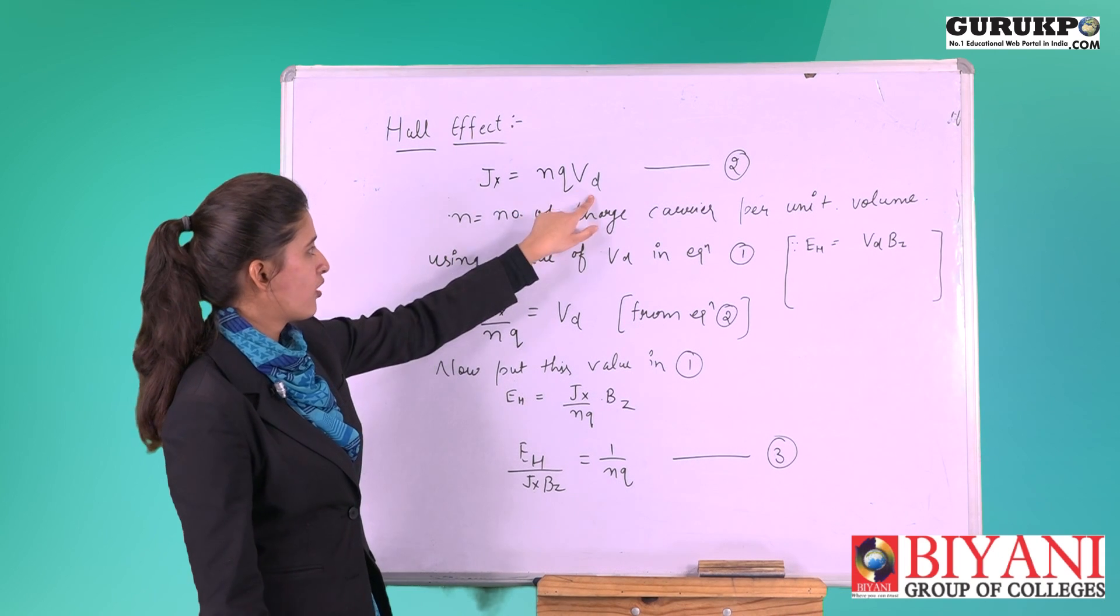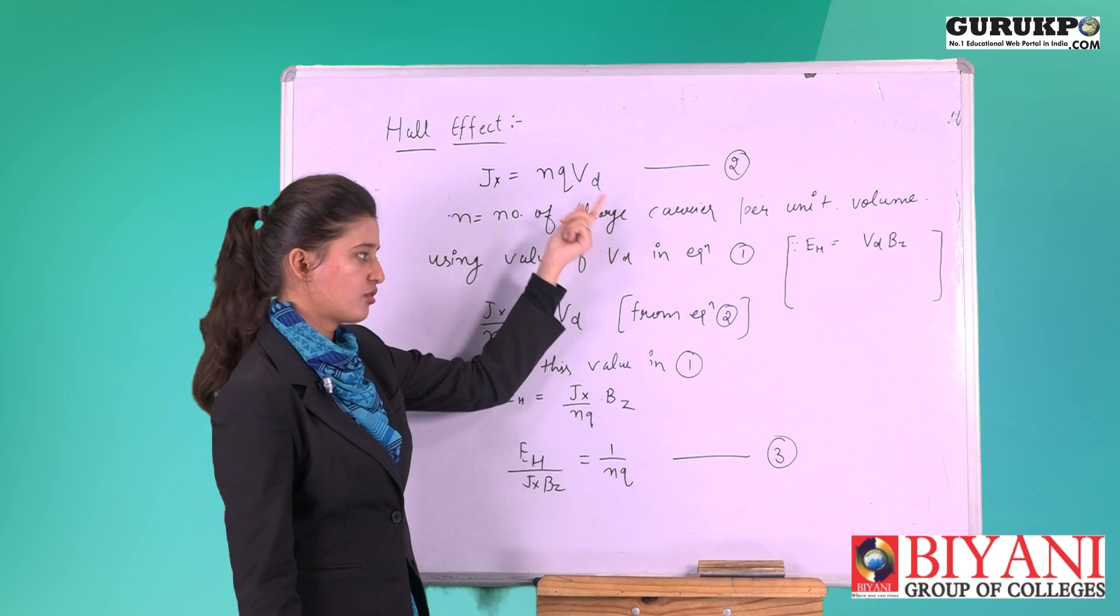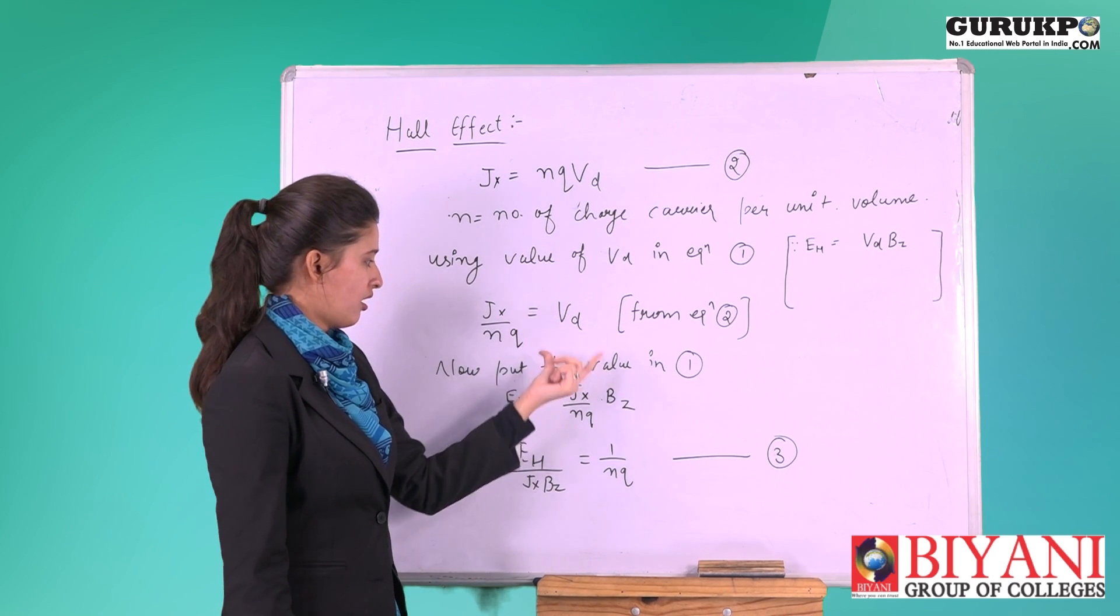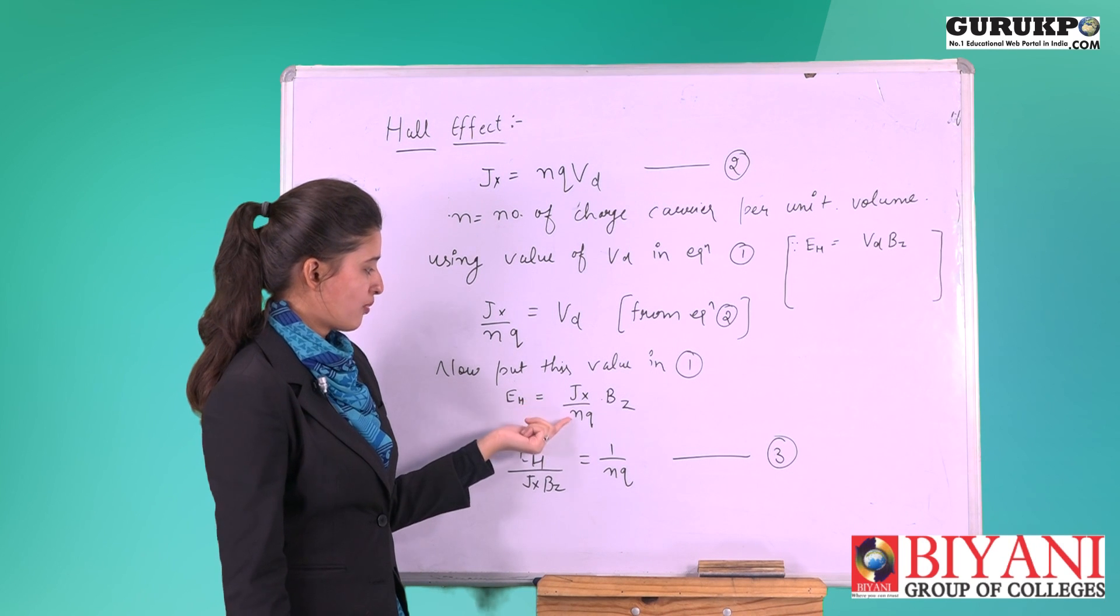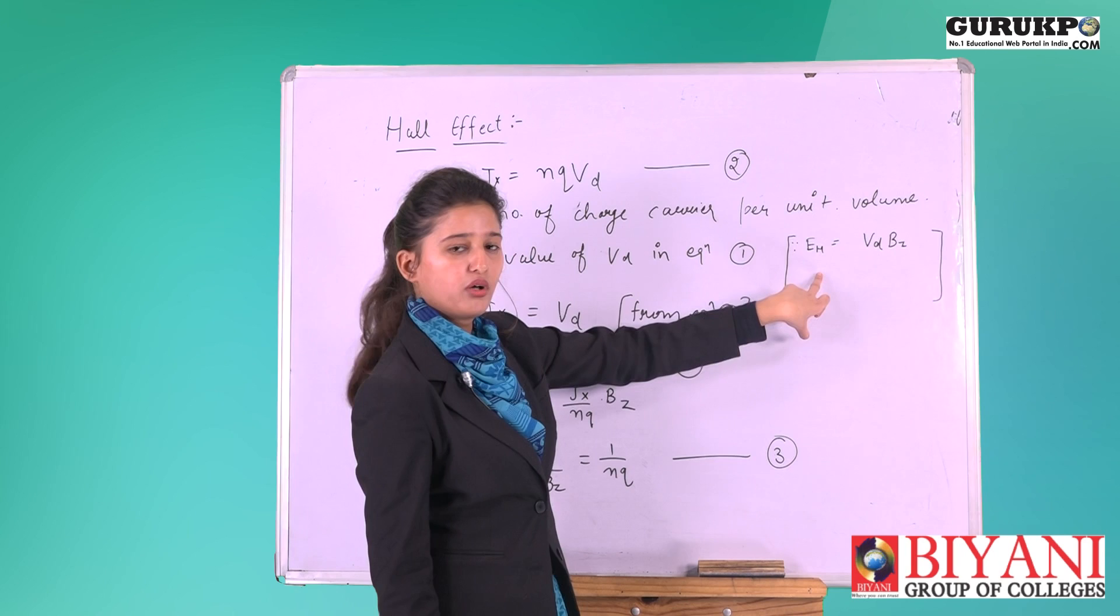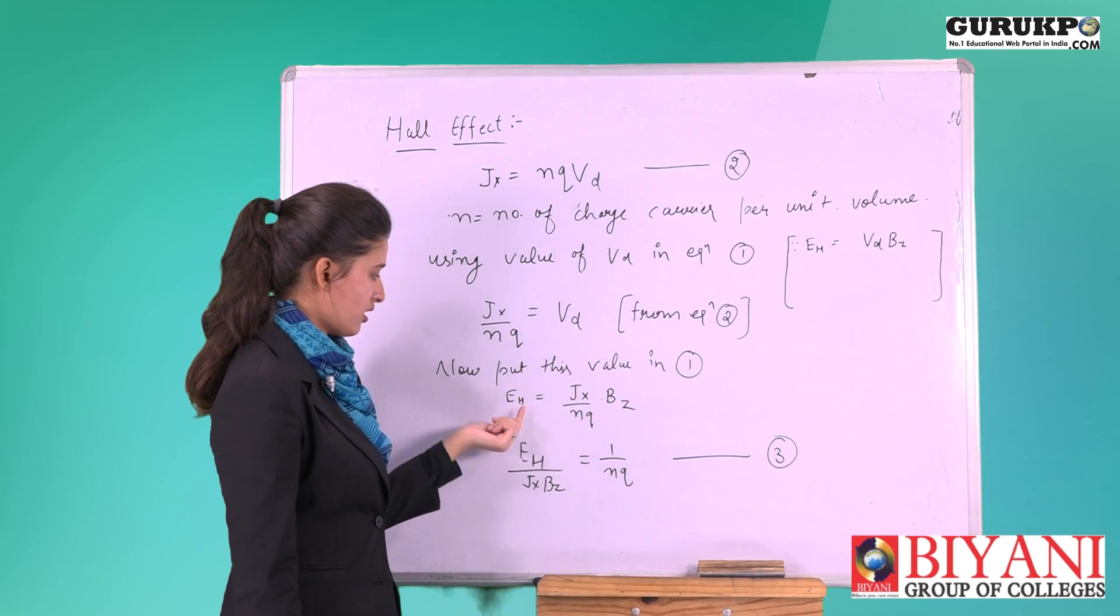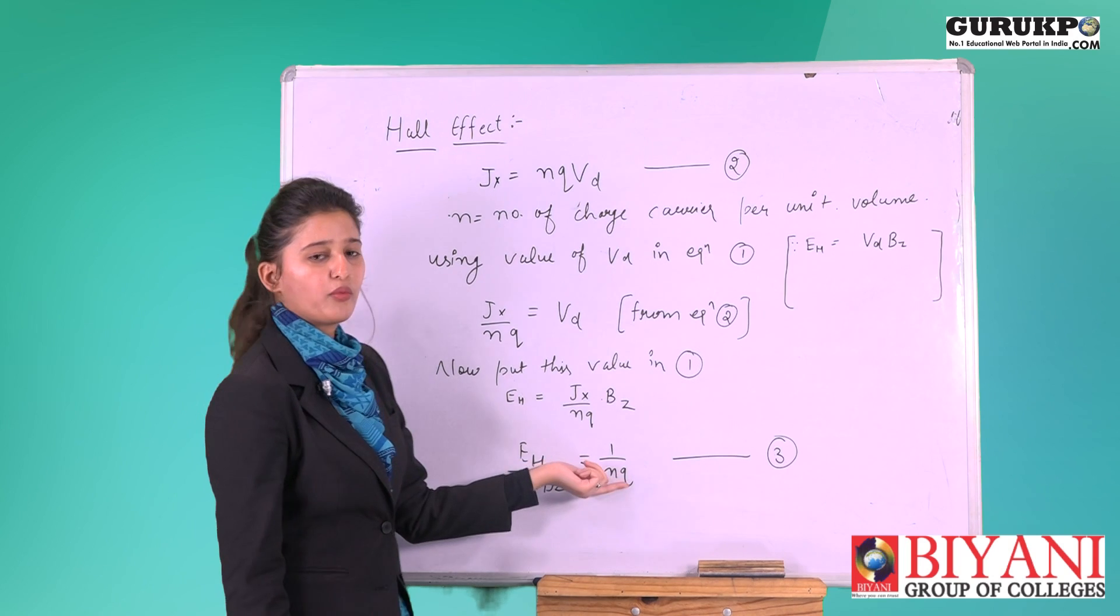From here, V_d equal to j_x upon n q from equation 2. We will put this equation in equation 1. E_h equal to j_x upon n q into B_z. From here, V_d equal to E_h upon B_z. E_h upon j_x B_z equal to 1 upon n q.